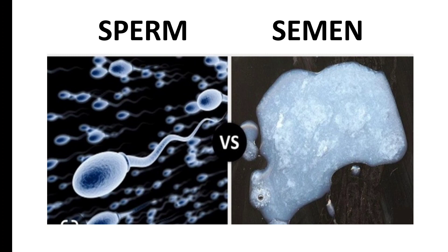You can see the structure of sperm here. Sperm has a head, a middle piece, a neck portion, and a tail portion. These three parts we are going to discuss. So what is semen?